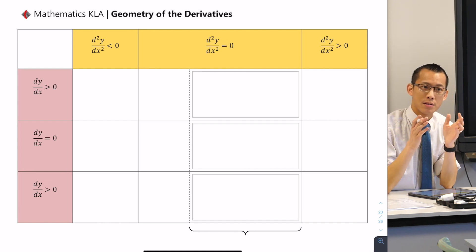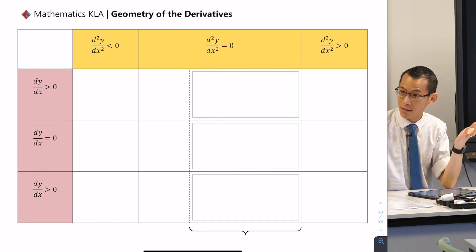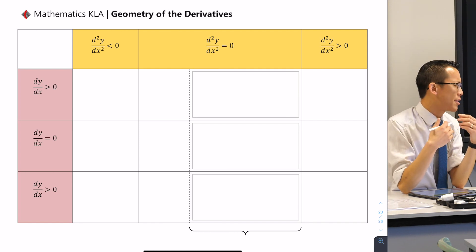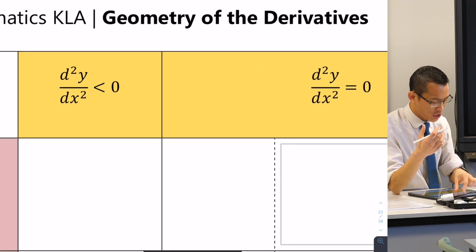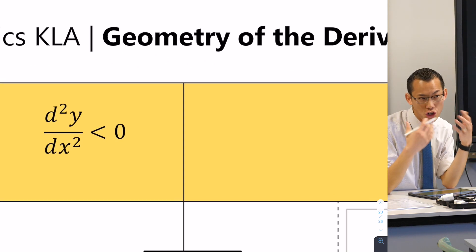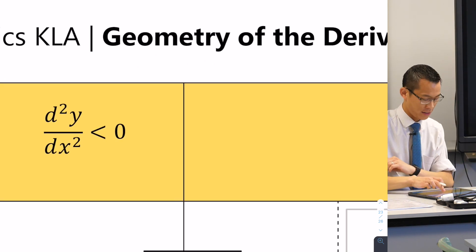So what we're going to think about is the different derivatives, the first and the second. You can see one is the columns and one is the rows and the influence they have on the shape of the curve, the geometry of the curve. We've already begun to explore this but I want to do this in more detail.